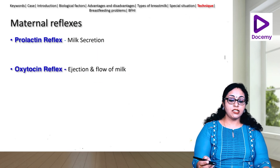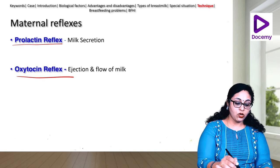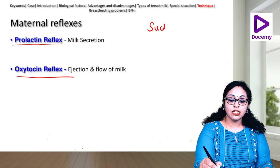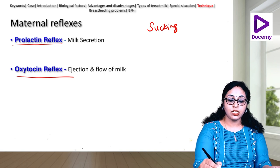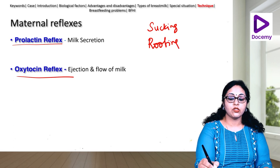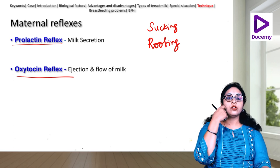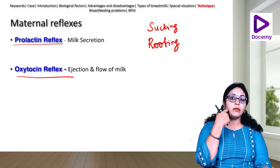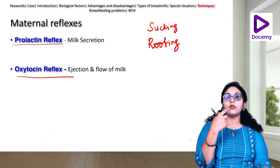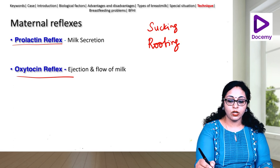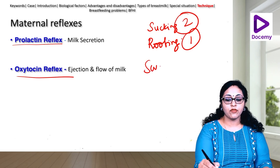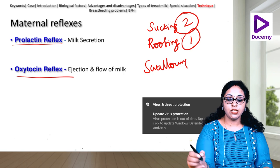Maternal reflexes: the prolactin reflex helps in milk production, and the oxytocin reflex helps in milk ejection — both triggered by the baby sucking at the breast. Infant reflexes: first the rooting reflex — stroking the baby's cheek with the breast causes the baby to turn to that side. Then the sucking reflex, followed by the swallowing reflex.